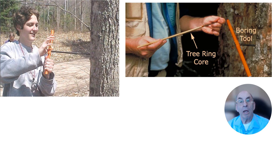In practice, foresters and scientists obtain tree ring samples from living trees by using a device called an increment borer, like the one shown in the picture on the left. The borer can be used to extract a core sample like the one shown on the right. After the core sample is removed from the tree, a sealant is applied to the bark and the tree will continue to grow, essentially unaffected by the core sample removal process. The age of the tree can be determined just by counting the number of rings. Scientists generally obtain core samples from many trees across a fairly large area to ensure that their results are not being skewed by local conditions.